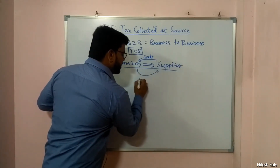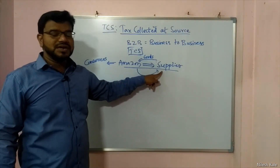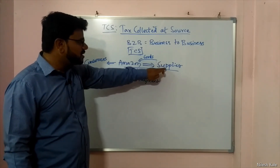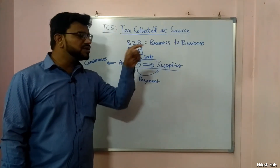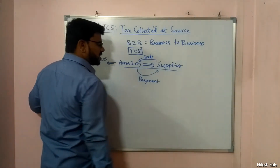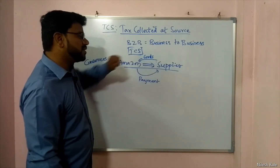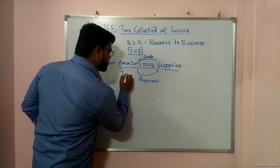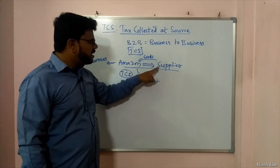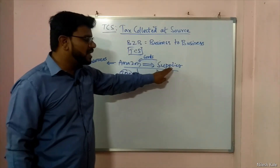The transaction between Amazon and the supplier: Amazon is receiving goods from the supplier and Amazon is making payment to the supplier. This supplier is a businessman — not the final consumer. Government does not know who this supplier is and whether this supplier, as a businessman, is filing their returns. Filing a return is very important for the government. So in this case, government says to Amazon: when you are making payment, first deduct tax — that is Tax Deducted at Source — because for the supplier it is income.